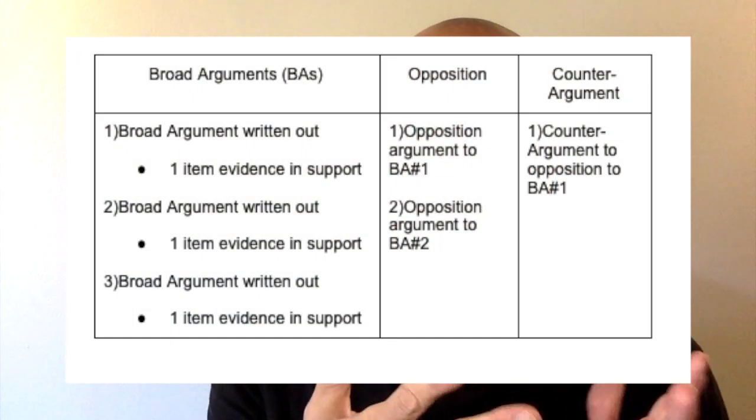First, choose a topic and make a statement with a lot of intellectual room on both sides — in AP US History, one of my earliest debates has students defend either the Federalists or the Democratic-Republicans from the 1790s. Second, have them prepare the debate at home. In their debate prep notes, they create a column of broad arguments in support of their side, then a column of counterarguments to their own arguments, and then a third column rebutting those counterarguments — so it kind of looks like this on the assignment sheet.